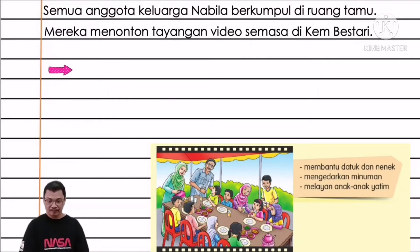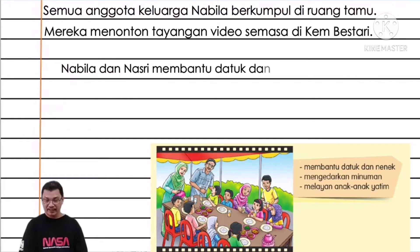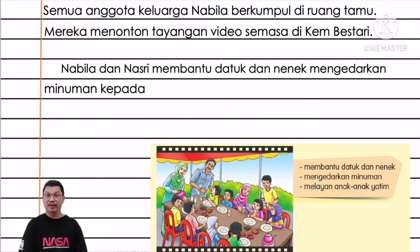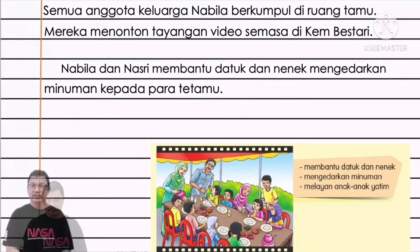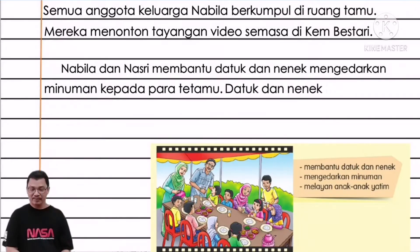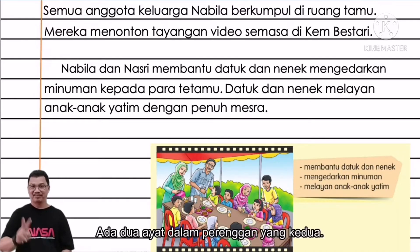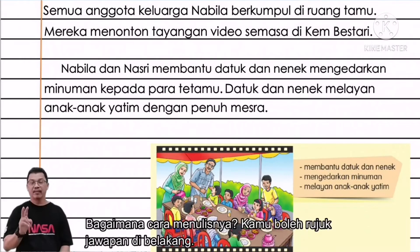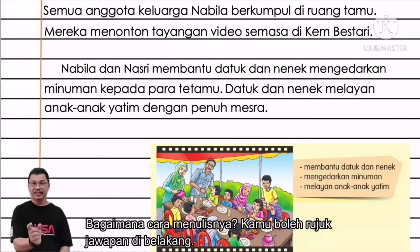Cikgu cuba memberi ayatnya: Nabilah dan Nasri membantu Datuk dan Nenek mengedarkan minuman kepada para tetamu. Datuk dan Nenek melayan anak-anak yatim dengan penuh mesra. Ada dua ayat dalam perenggan yang kedua. Kamu boleh rujuk pada papan hijau di belakang. Mulakan di tengah sedikit dan selang sembaris daripada perenggan yang pertama.